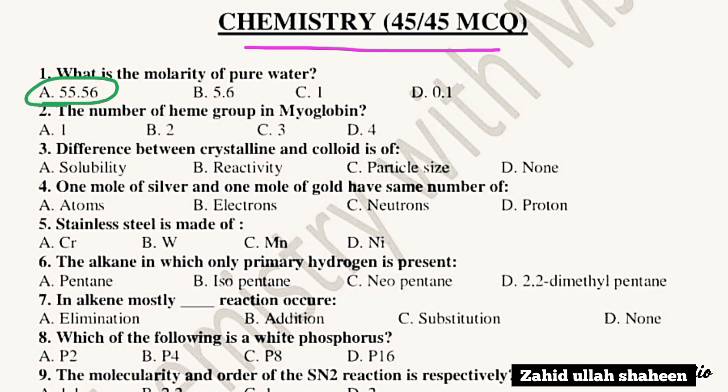Question 2: What is the number of heme groups in myoglobin? Myoglobin has one heme group.